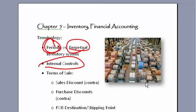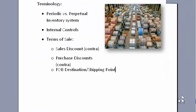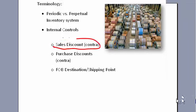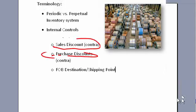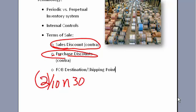In terms of a sale, when we sell an item, we know that we can give people a sales discount. On the flip side is a purchase discount. So we can sell an item and say that it's 2/10 net 30 — they get a 2% discount if they pay within 10 days of the invoice date; otherwise, the net value is due within 30 days.